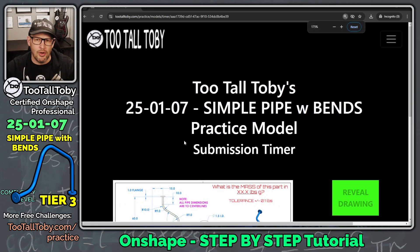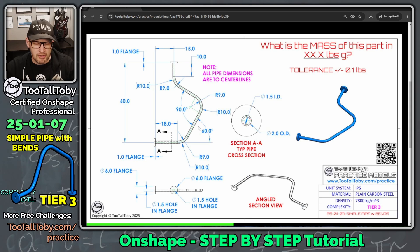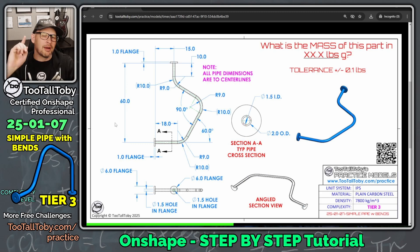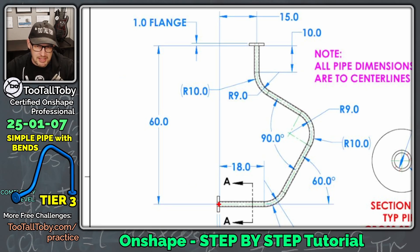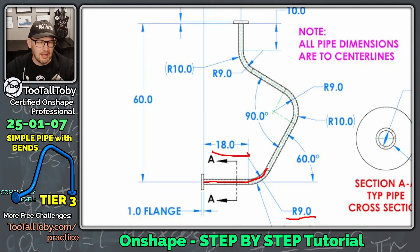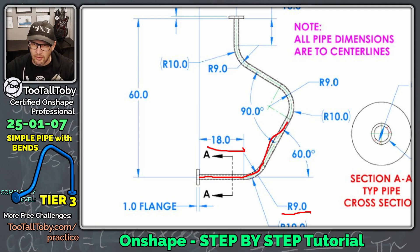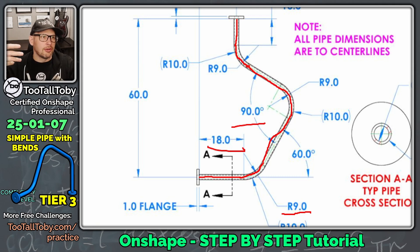Before modeling, let's talk about our game plan. We're going to use a sweep feature, which uses two sketches. The first sketch — the sweep path — will be created on the top plane. It starts with an 18-inch straight section, then a radius-9 bend, then a line at a 60-degree angle, then another radius-9 bend at 90 degrees, and finally another straight line.